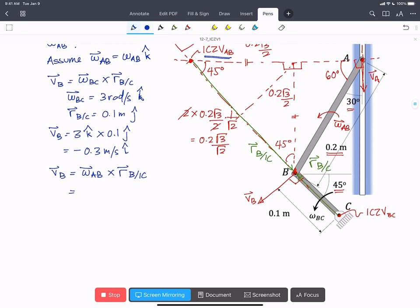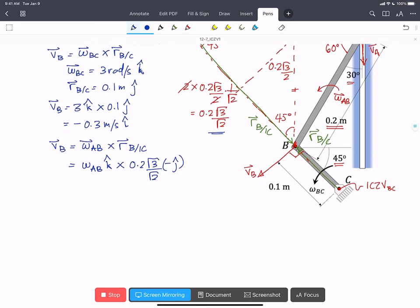So we've already gotten what omega AB was. That's the omega AB the scalar in the K hat direction. Crossed with, we've got the distance here, 0.2 root 3 over root 2 in the minus J hat in this case. So we do that cross product out. We get 0.2 root 3 over root 2 omega AB in the positive I hat.